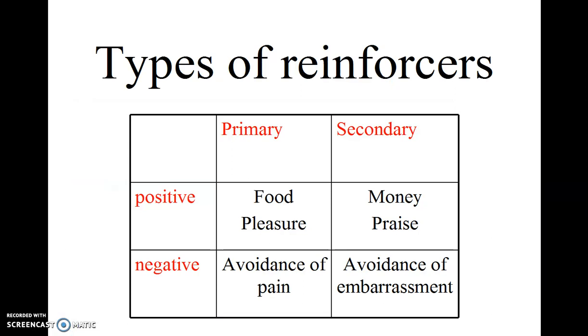So this is a table from your book showing the different types of primary and secondary reinforcers—those that are positive by providing something the organism appreciates, and those primary and secondary reinforcers that are negative because they take away or avoid something the organism does not want, the aversive stimulus of pain or embarrassment.